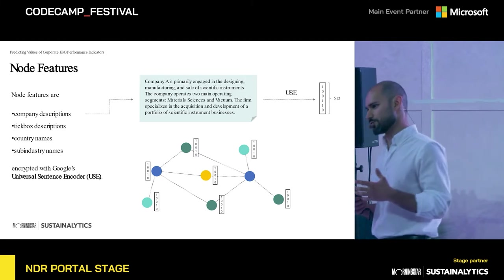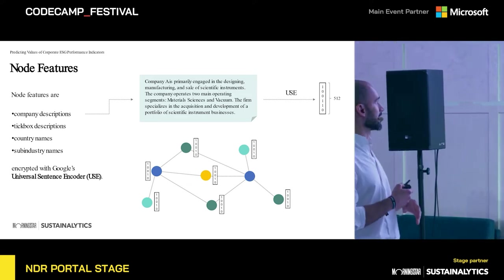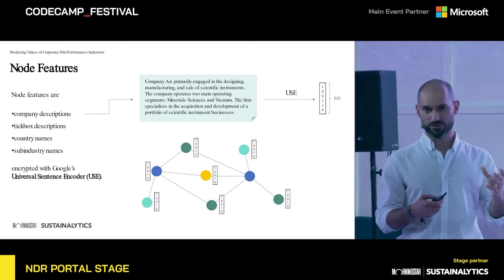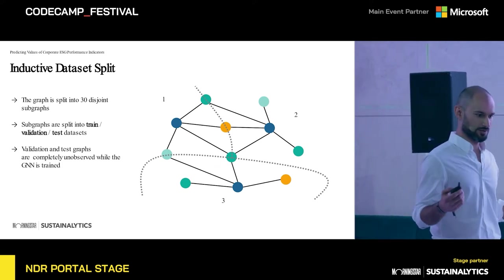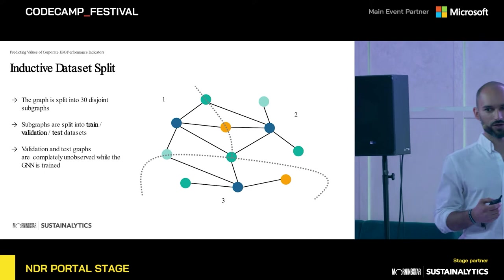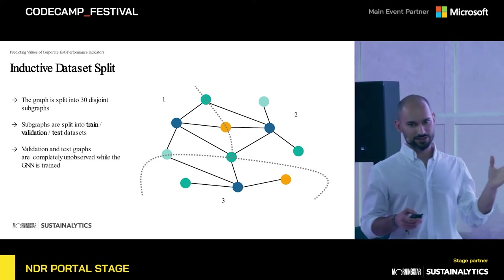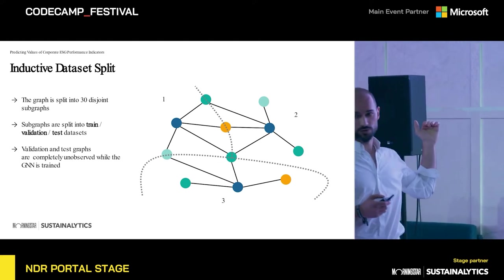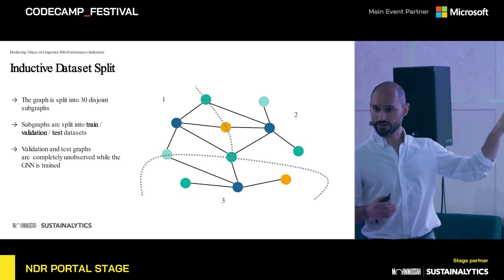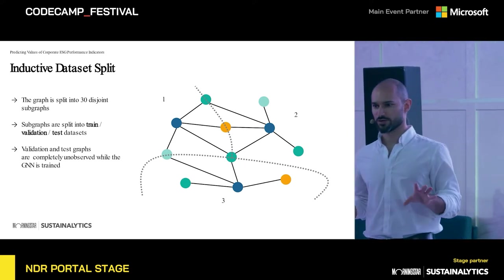To process this graph for use with neural networks, we first compute node embedding vectors for each node, using Google's universal sentence encoder to convert company descriptions, tick box descriptions, country names, and sub-industry names into vectors. To train a network using this graph, we use a different paradigm from the transductive scenario Mihai presented. Here we use an inductive scenario, in which we first split the graph into disjoint parts — we split into 30 sub-graphs — and then put those disjoint sub-graphs into train, validation, and test datasets. The validation and test parts of the graph are not observed by the model while it is trained.